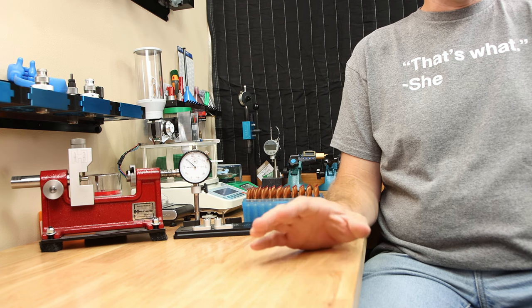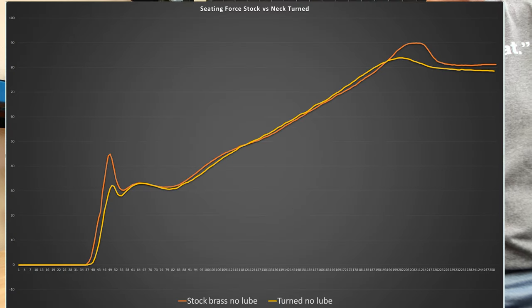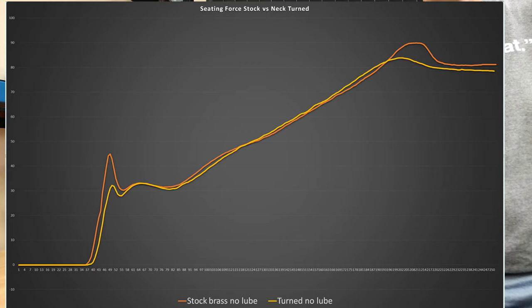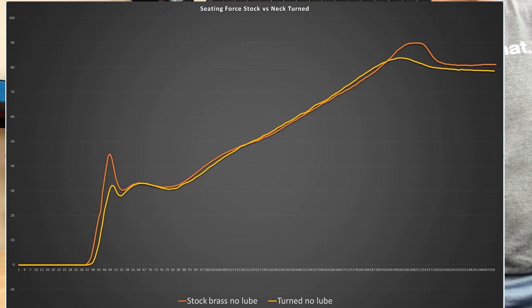Now these graphs are going to show the average seating force for 10 pieces of stock brass versus 10 pieces of neck turn brass. In case you're not familiar with these graphs, this is the graph of the total force during the seating process. The initial seating force is when the projectile starts to seat in the case, and the bump at the higher end of the curve is where the projectile has passed the case neck shoulder junction inside the case neck.